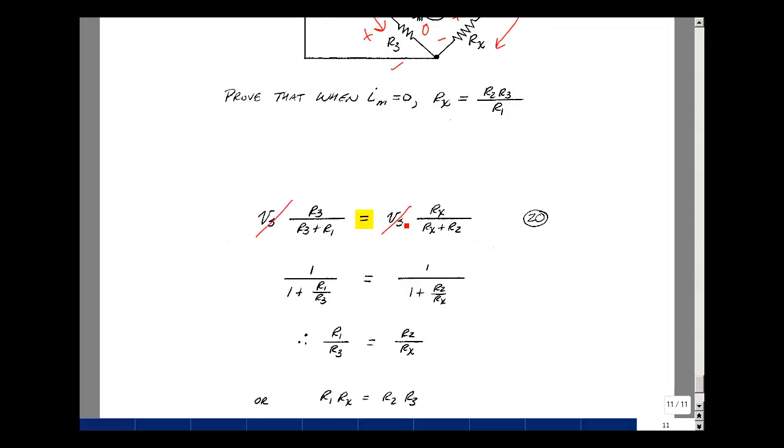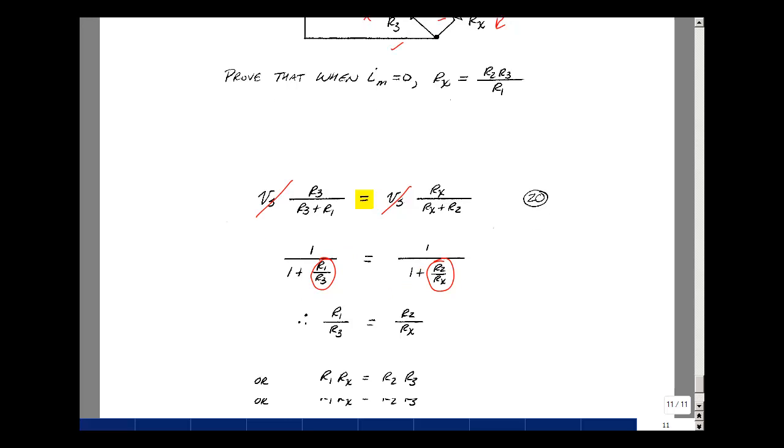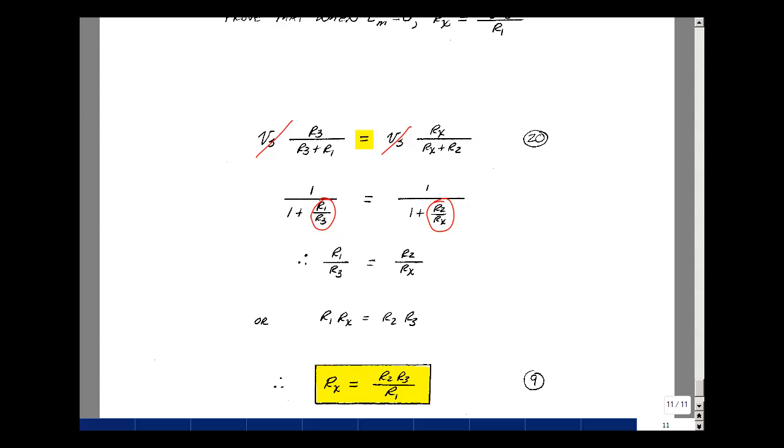The V sub s drop out. I could write this by dividing numerator and denominator by R3. So I get a 1, a 1, and R1 over R3. Divide numerator and denominator by R sub x, I get a 1, a 1, and then R2 over R sub x. So these two equations look the same. So this quantity here would have to be the same as this quantity for this equation to be in balance. So R1 over R3 must equal R2 over Rx. You could cross multiply these two. So R1 Rx equals R2 R3. This is really the product of the cross arms in the bridge, and that's how I remember the formula. But this, of course, is the derivation. Solving for R sub x, we get R2 R3 over R1. This part of the completing of the algebra was worth nine points.